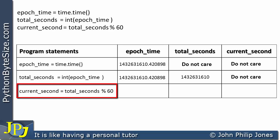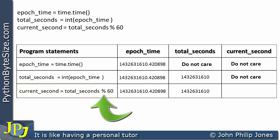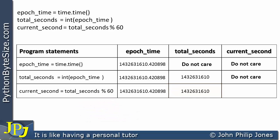Now let's consider this third program statement. Epoch_time and total_seconds are both unaffected, so we copy them down. The modulo operator gives the remainder when total_seconds is divided by 60. In this particular case the result will be 30 seconds, so the number of seconds past the current minute is 30. Earlier we did it for 67 seconds and the remainder was 7; here the remainder when total_seconds is divided by 60 is 30.